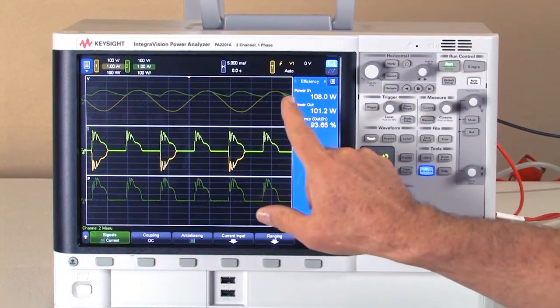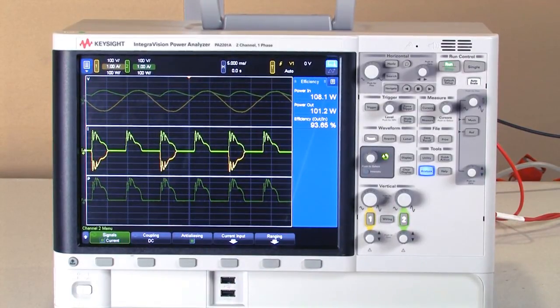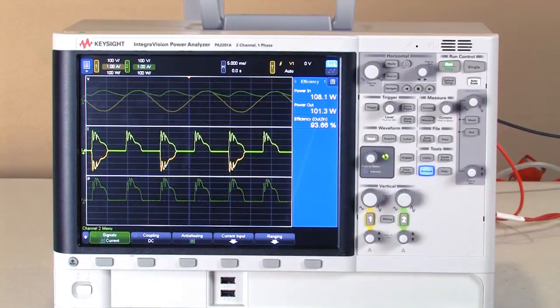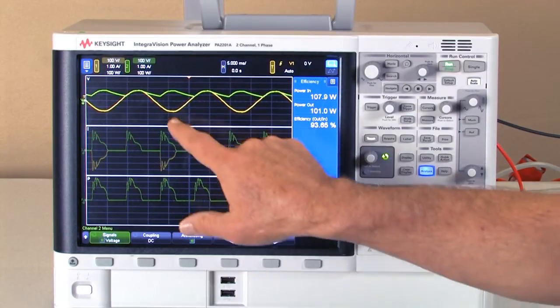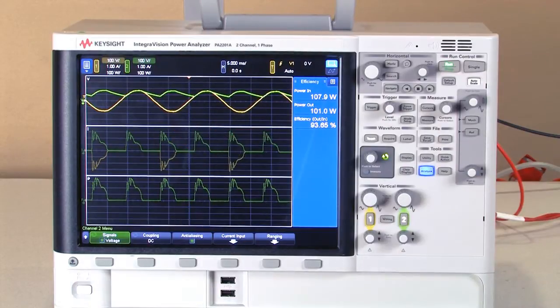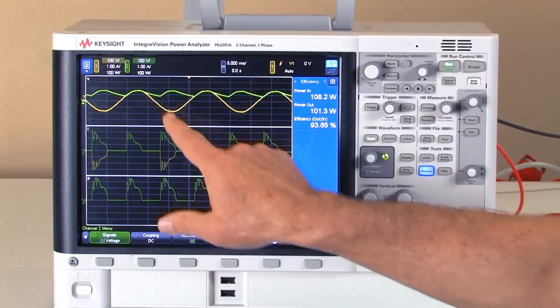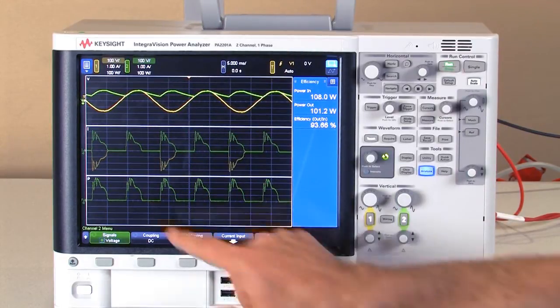On the top set of waveforms are the voltage waveforms with the yellow being the voltage waveforms. Notice you'll see the full AC signal on the input and the rectified signal as the output signal.